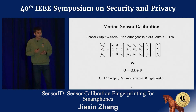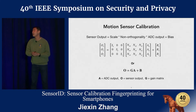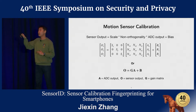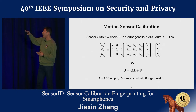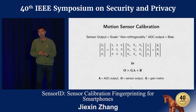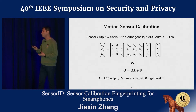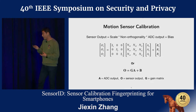In general, motion sensors first convert the analog environmental measurement to a digital value through a component called the analog-to-digital converter. Then these calibration matrices are applied to the ADC outputs to generate accurate sensor readings using the formula shown. The formula can be further simplified, and the objective of our attack is quite straightforward: since we know the sensor output — the matrix O — our objective is to recover the value of the gain matrix G.